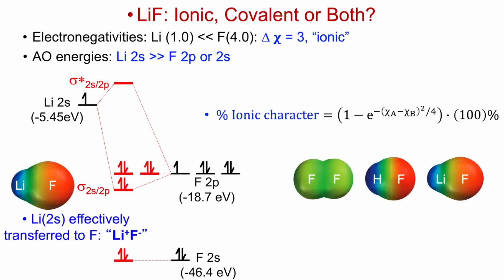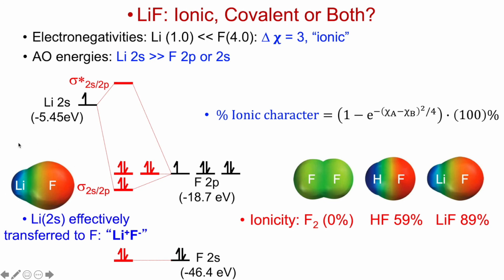We can calculate the percent ionic character from the electronegativity differences of the two atoms. Applying this formula to three cases: for F₂, where the two atoms are the same, we get a perfectly covalent bond with equal BSD distribution and ionicity equal to zero. Using the electronegativities of H and F, we calculate 59 percent ionicity for HF. For lithium fluoride, we calculate an ionicity of 89 percent — so it is largely ionic, but 89 percent is not 100 percent. There is 11 percent covalency, and the realistic picture of the bonding is that portrayed by the boundary surface diagram for this bonding orbital.